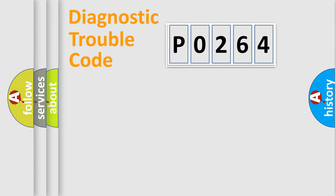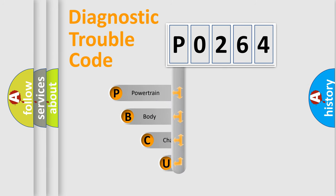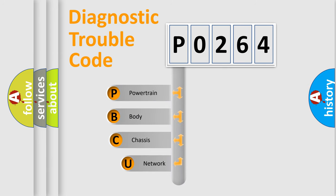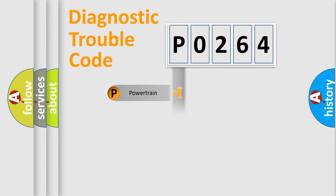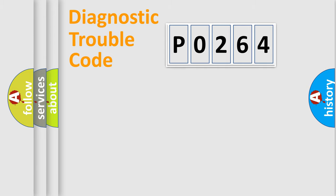Let's do this. First, let's look at the history of diagnostic fault code composition according to the OBD2 protocol, which is unified for all automakers since 2000. We divide the electric system of an automobile into four basic units: Powertrain, Body, Chassis, and Network.